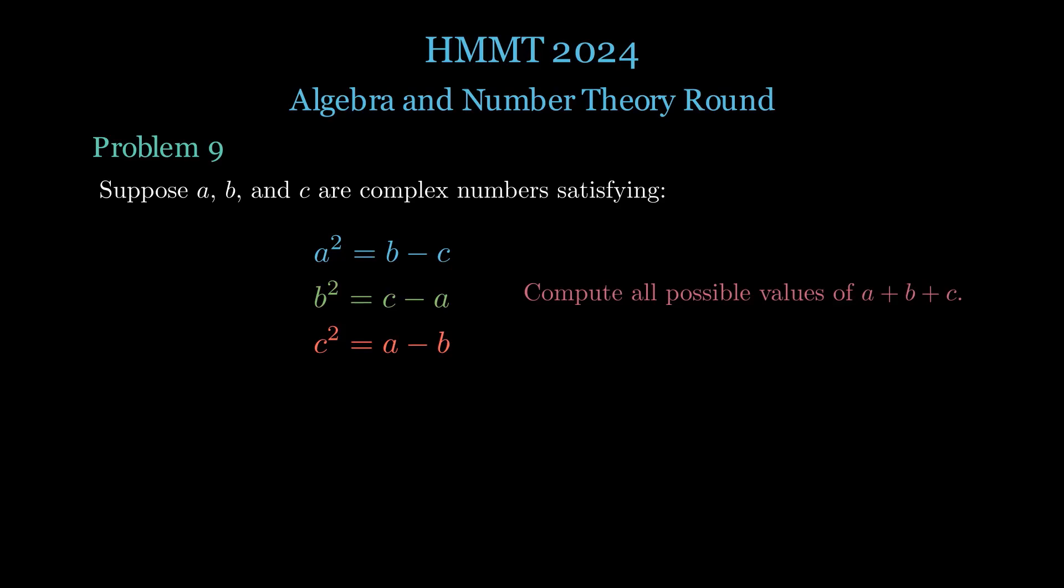Suppose you have three numbers. We'll call them A, B, and C. They're complex numbers. Here's what we know about them. Seems pretty symmetric, right? But here's where things get interesting. The task is to figure out all possible values of the sum A plus B plus C. Think about that for a second. What kind of numbers could satisfy these conditions?